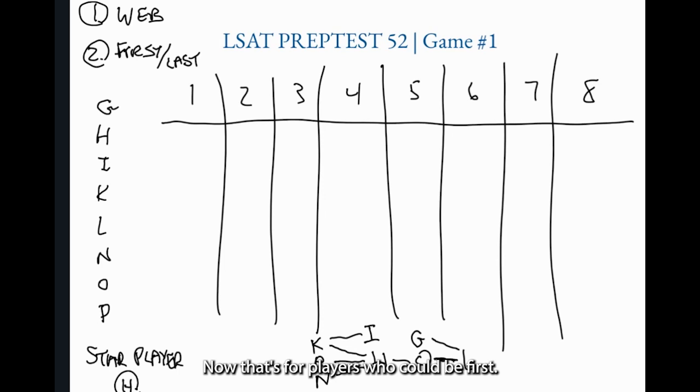I'm agnostic about whether you write that down. If you want to write G, K, P, or N kind of above column number one, that's great. Feel free to do that. Some students like to write more than others. But where I'm not agnostic, where I'm certain and have conviction, is that spot number eight should be written down in this case because it's more limited.